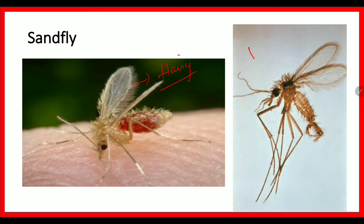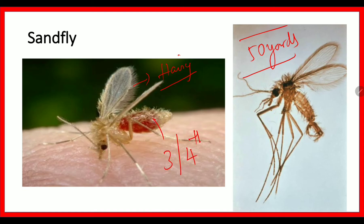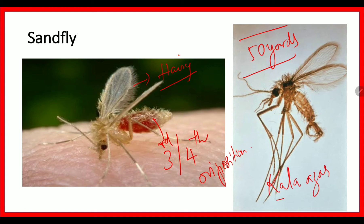The sand fly flies only about 50 yards from the breeding place. It causes a painful bite, especially at night, biting every third or fourth day. The diseases caused by sand fly are: sand fly fever, oriental sore, and kala-azar. As a mnemonic for kala-azar — since sand fly bites at night, say 'kala kala azar' fast and it becomes 'kala-azar.' So the disease transmitted by sand fly is kala-azar.